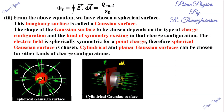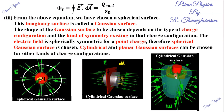If we have a plane sheet, the Gaussian surface is cylindrical. In that case, we consider the Gaussian surface as cylindrical. If you consider the Gaussian surface, you will have two important points.